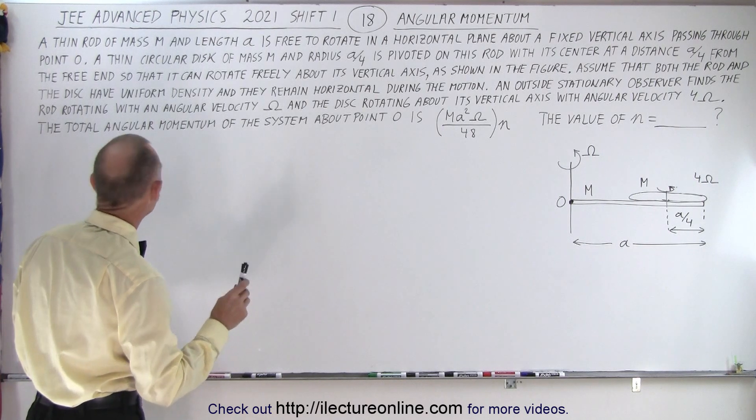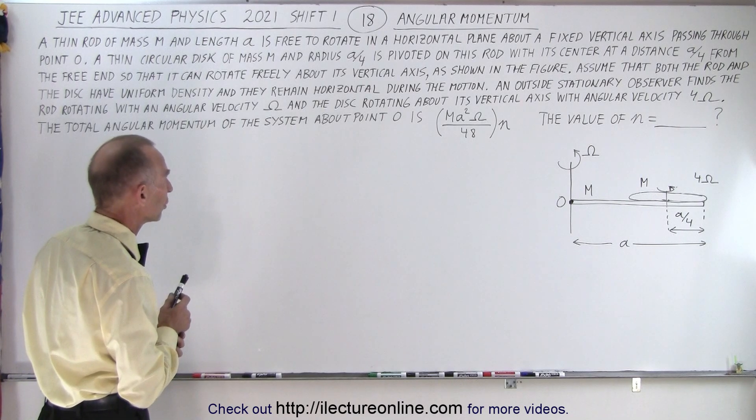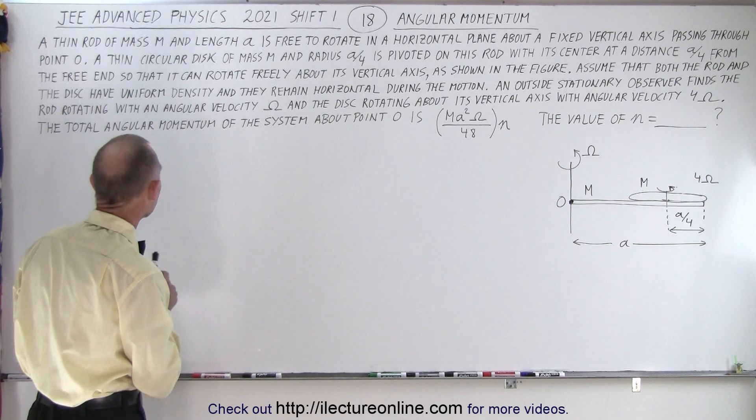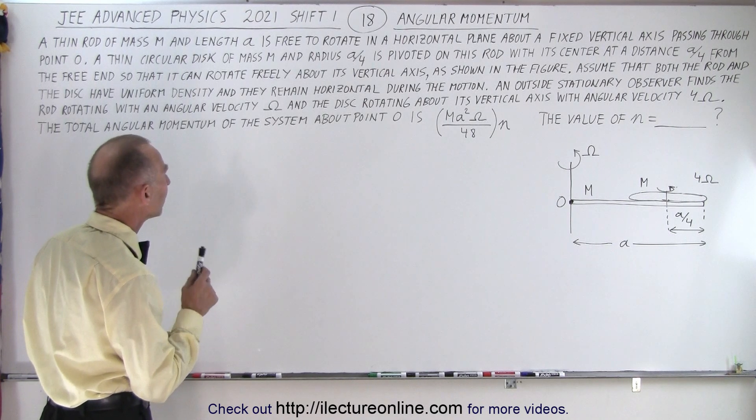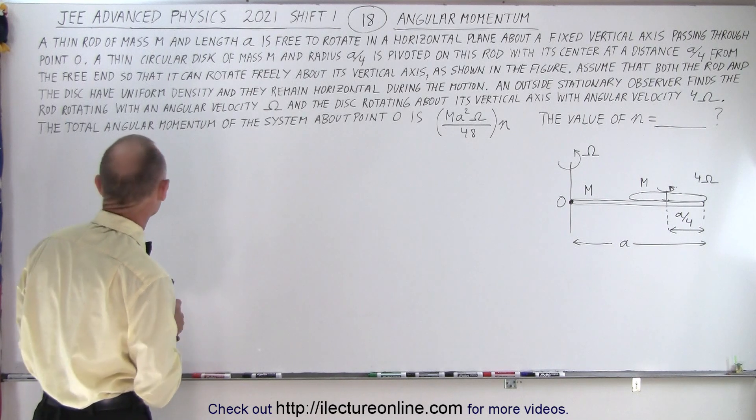Assume that both the rod and the disk have uniform density and they remain horizontal during the motion. An outside stationary observer finds the rod rotating with an angular velocity of omega and the disk rotating about its vertical axis with an angular velocity of 4 omega.